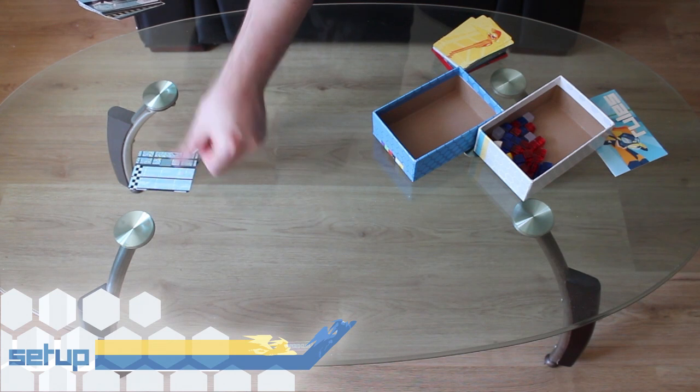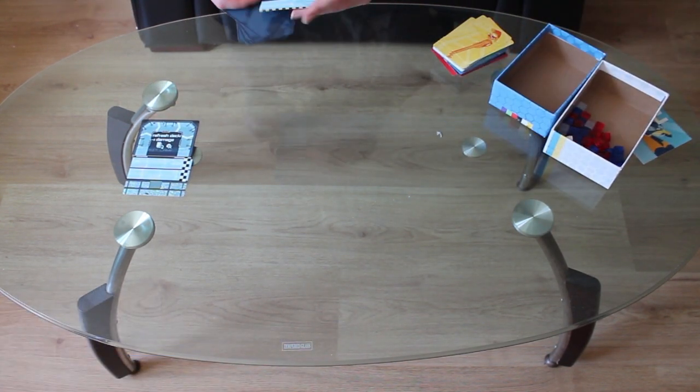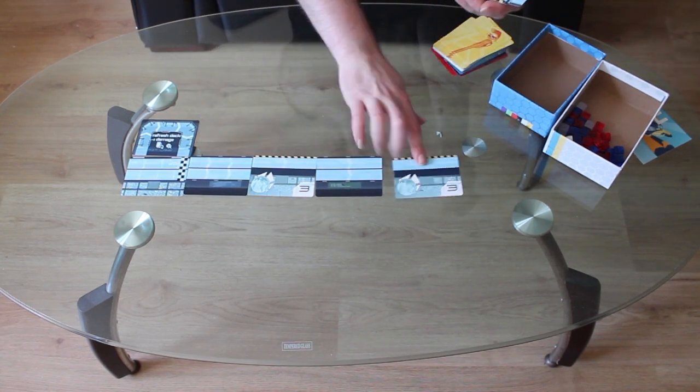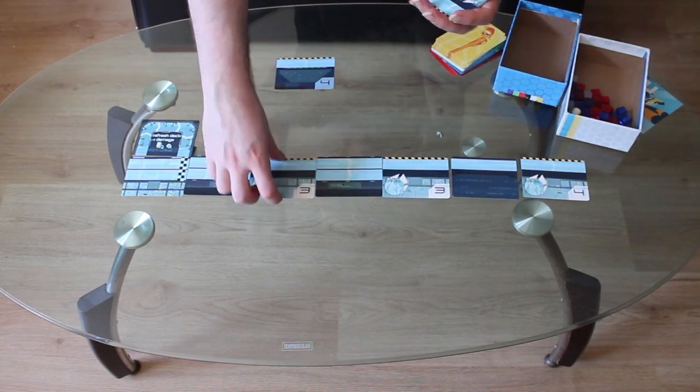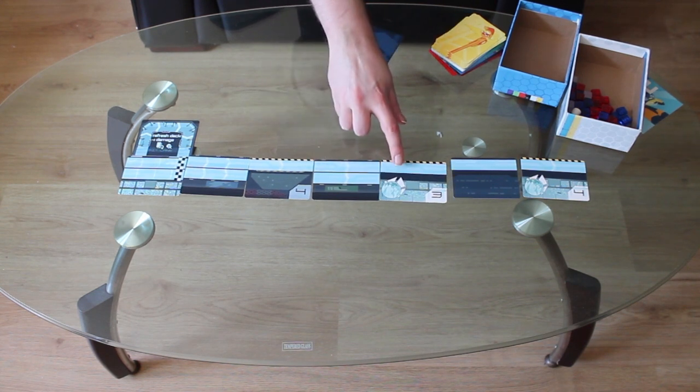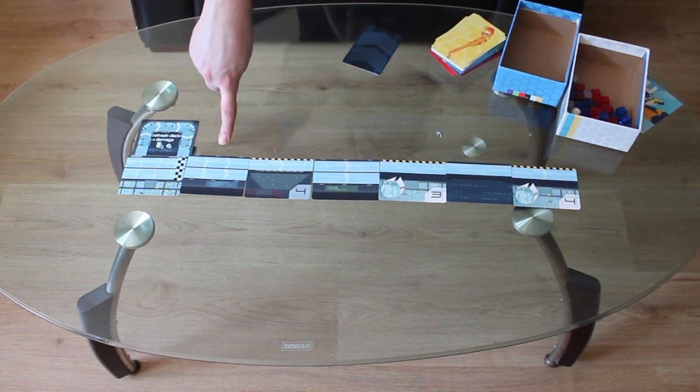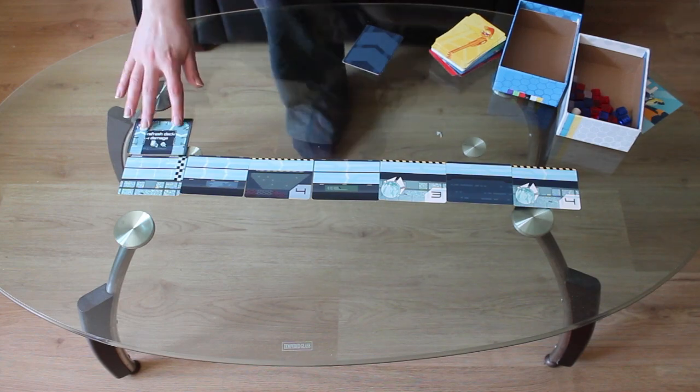To set up the track, take the start, finish and pit lane cards out of the track deck. Shuffle the remaining track cards and lay out 6 of them with the track steps aligned. Track cards can have 1 or 2 lanes, and they have 1, 2 or 3 spaces on them per lane. I like to make sure that the first card is a big open straightaway, but after a couple of games you'll get a feel for what you like. You can also adjust the length of the track, with longer tracks being harder.